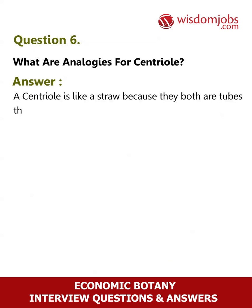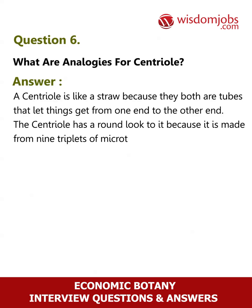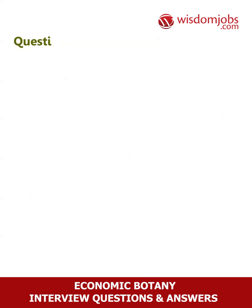Question 6: What are analogies for a centriole? Answer: A centriole is like a straw because they both are tubes that let things get from one end to the other. The centriole has a round look to it because it is made from nine triplets of microtubules that give it a straw-like appearance.